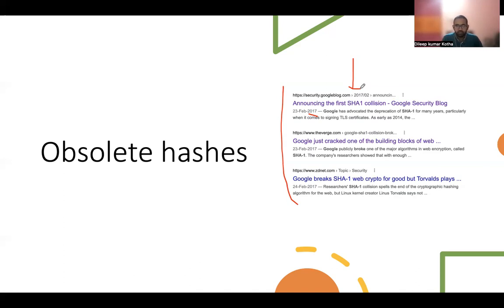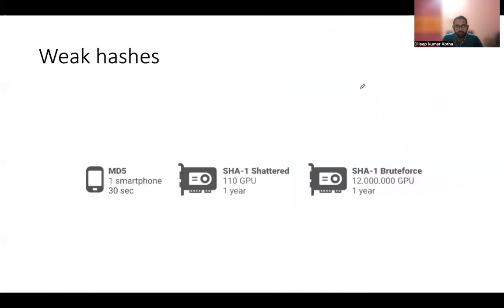One more thing regarding MD5: in 1995, when MD5 came into the picture, people thought it was near impossible to break. But now MD5 can be broken within 30 seconds on the smartphone we hold in our hands. These show how long it takes to break SHA-1 — we can use either brute force or the shatter technique, which is the technique Google used to achieve the SHA-1 collision in a meaningful period of time.